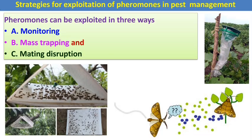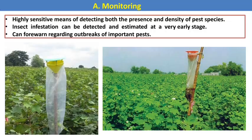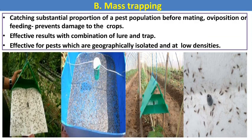Pheromone traps are used in three major ways in pest management: monitoring, mass trapping, and mating disruption. For monitoring: it is a highly sensitive means of detecting the presence and density of pest species; insect infestation can be detected at a very early stage, and it can give early warning about outbreaks of important pests. For mass trapping: catching a substantial proportion of the pest population before mating, oviposition, or feeding prevents crop damage. Effective results are achieved with the combination of lures and traps, and it is especially effective for pests that are geographically isolated and at low densities.